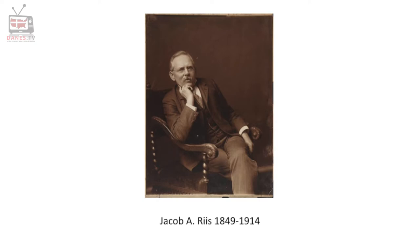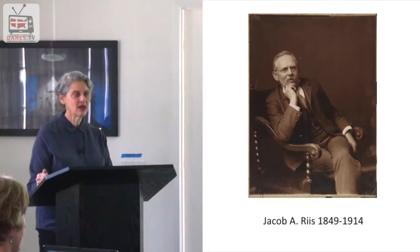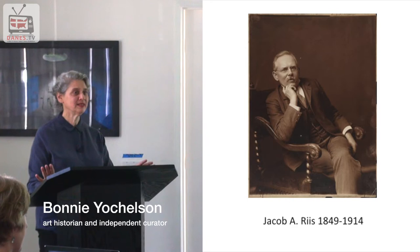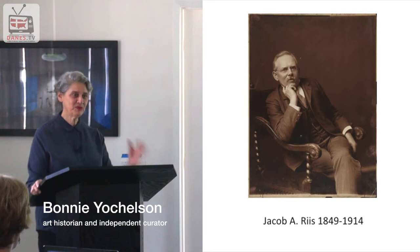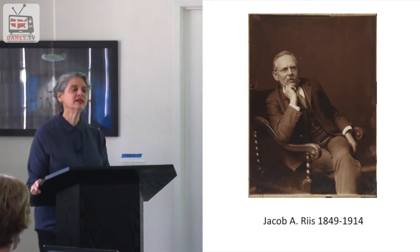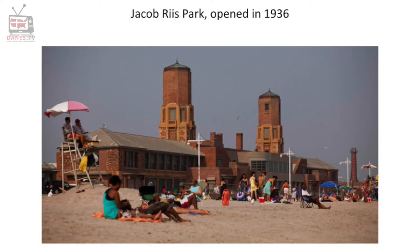Jacob Riis was born in Ribe in 1849 and came to the United States when he was 20, in 1870. I've learned a great deal about the context which he doesn't provide, and it's been very useful to understand that he was part of the major migration from Denmark. He died in 1914, and during his lifetime in the United States he was a national celebrity.